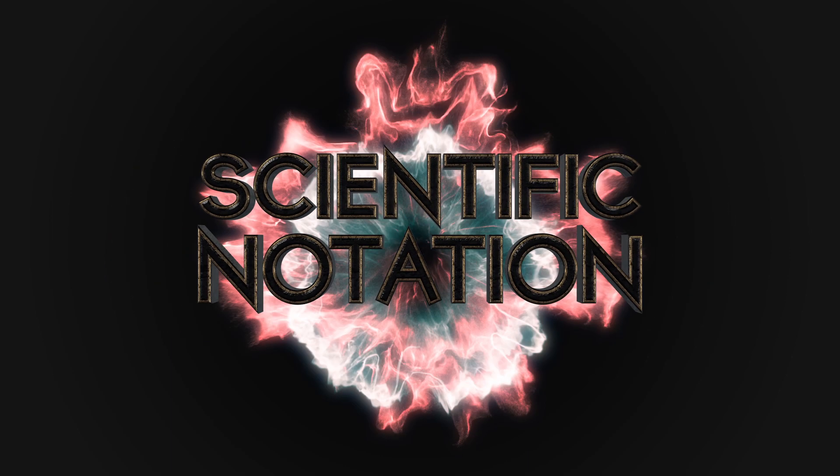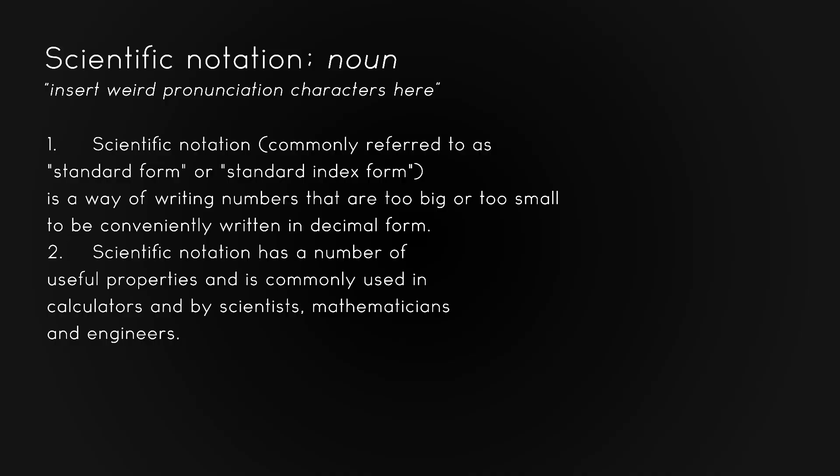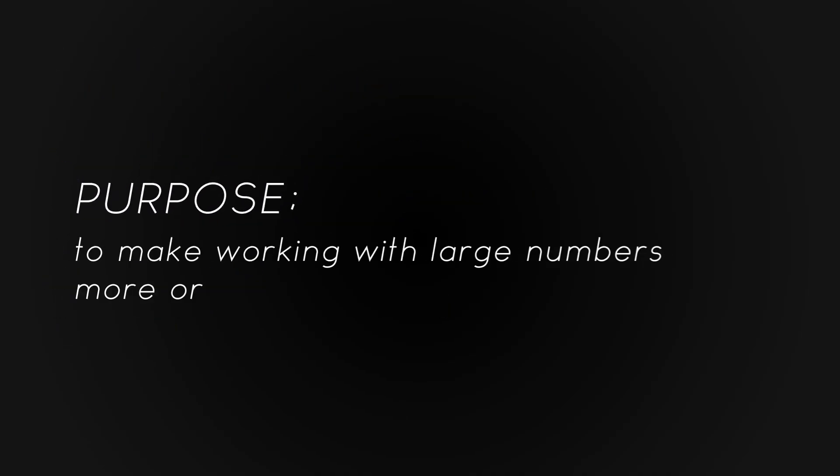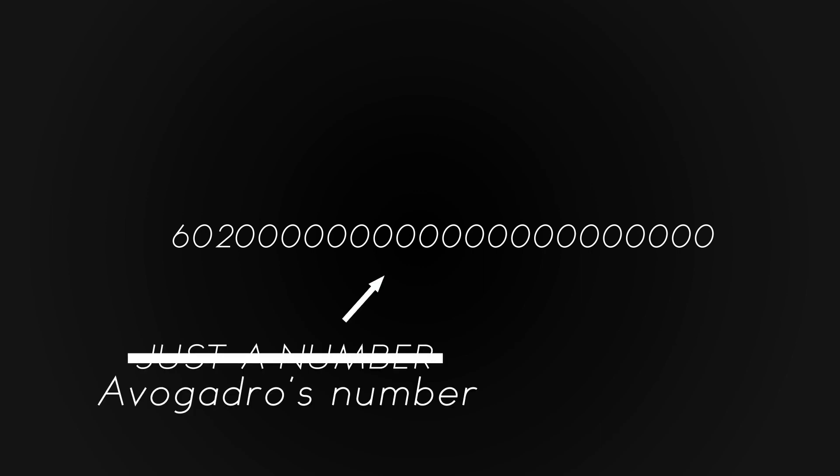So, scientific notation. Its whole purpose is to make working with large numbers more organized and simple. To put it another way, you are taking all those zeros on the end of large numbers and consolidating them into 1 times 10 to the whatever, so it doesn't take up as much space. Since we're in chemistry, it seems only appropriate to use the mole as our example. A mole, for any of you who are still unaware, is just a number — Avogadro's number, actually. And this number is always 6.02 times 10 to the 23rd, which is actually set in scientific notation.